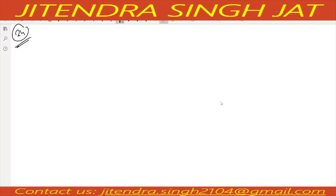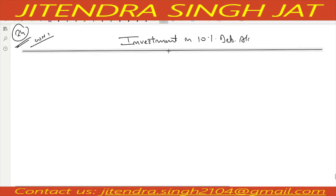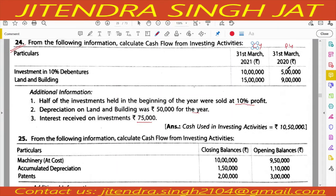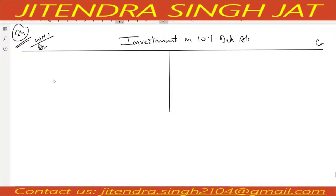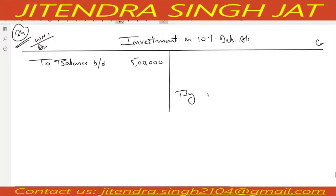Investment in 10 percent debentures account — debit side and credit side. Investment account is an asset, starts on debit side. Opening balance of 5 lakh comes on debit side as balance brought down. Closing balance of 10 lakh comes on credit side as balance carried down.